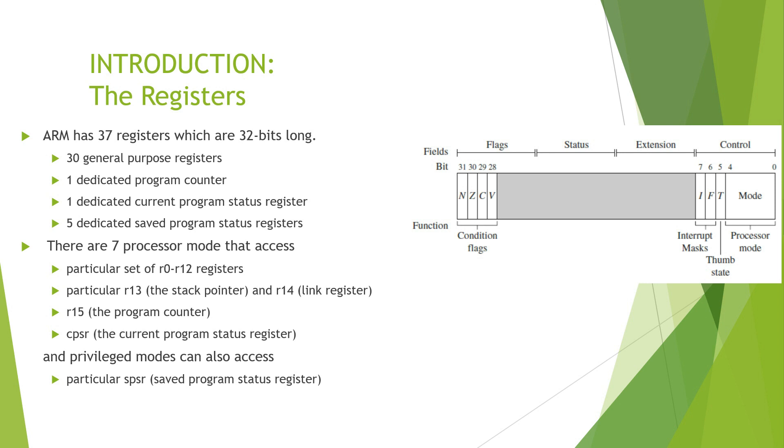It has 37 registers of which 30 are general purpose registers, 1 program counter, 1 current program status register and 5 dedicated saved program status registers. In the general usage of the ARM processor, we have R0 to R12 registers.